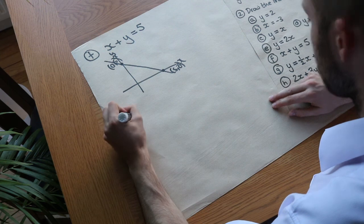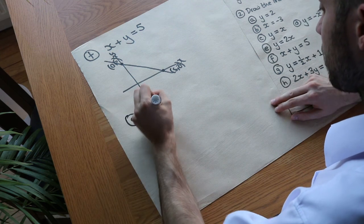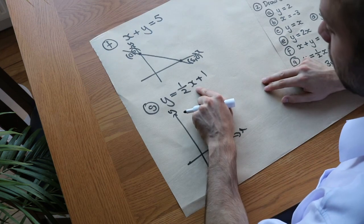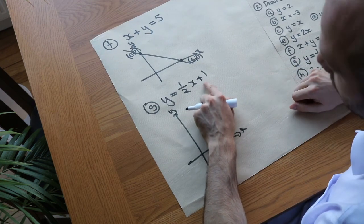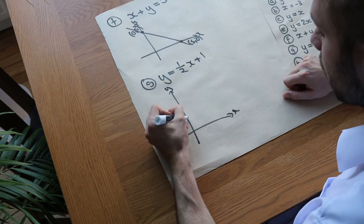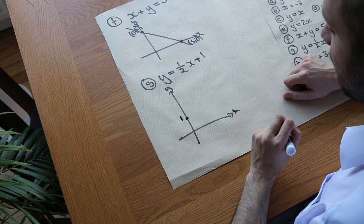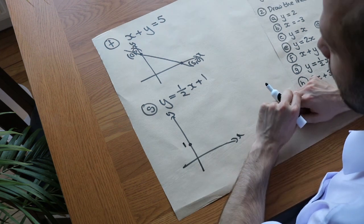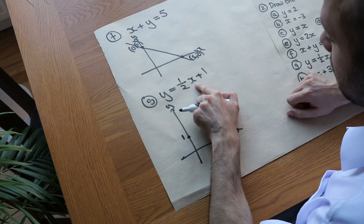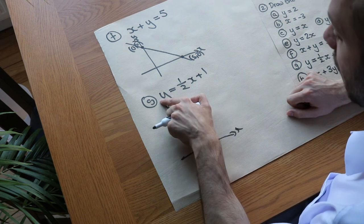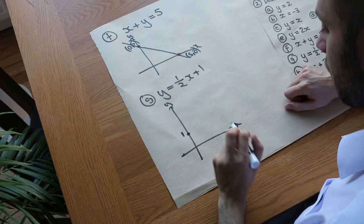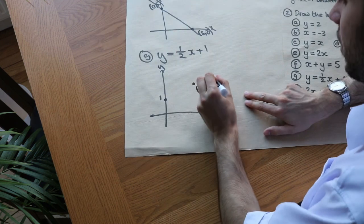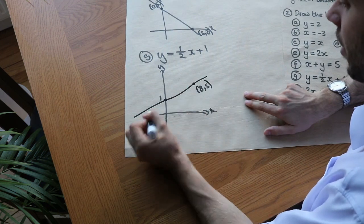Now y equals half x plus 1. Just pick two values of x. If x is 0: half times 0 is 0, plus 1 is 1 — so y = 1, giving (0, 1). Let's pick an even number so we can halve it easily — say x = 8: half times 8 is 4, plus 1 is 5 — so y = 5, giving (8, 5). Then we join them up with a straight line going on forever.